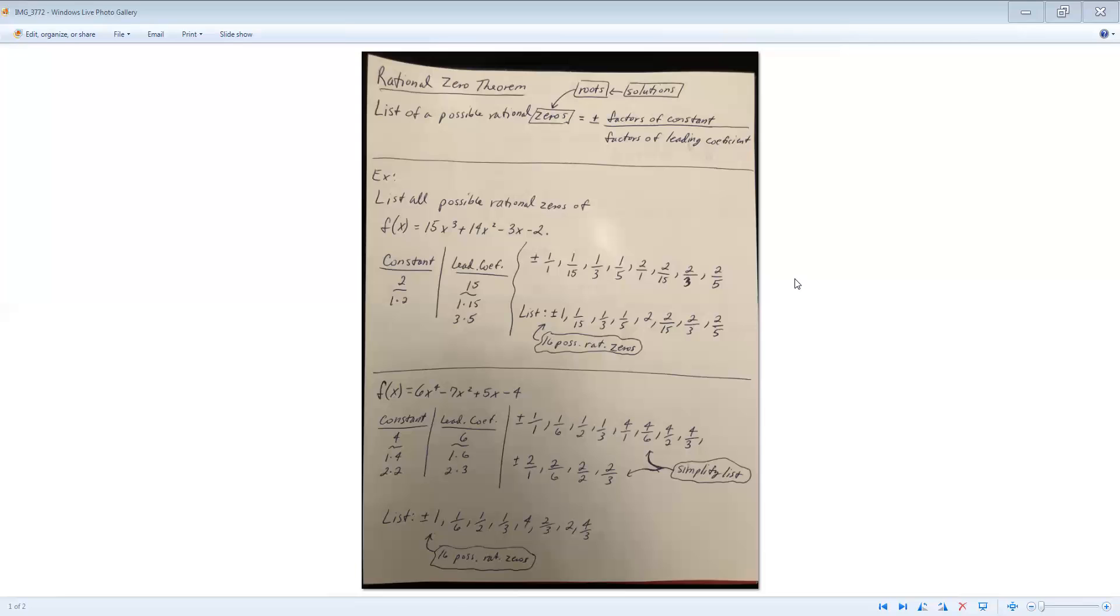Looking at the next one, I have 6x to the fourth minus 7x squared plus 5x minus 4. My constant is 4, so my factors of 4 is 1 times 4, 2 times 2. Factors of 6, 1 times 6 and 2 times 3. So I take the 1, 4, and 2 and place them over 1, 6, 2, and 3.